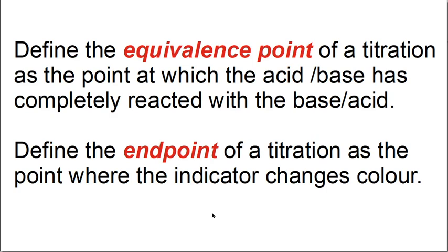In chemistry there are two distinct terms: the equivalence point and the end point. The equivalence point is when the acid and the base have completely reacted with each other. The end point is where the indicator changes color. These two may not be exactly the same, which is why they have different names. They are sometimes used interchangeably in exam questions, but the exam guidelines require you to know both distinct meanings.